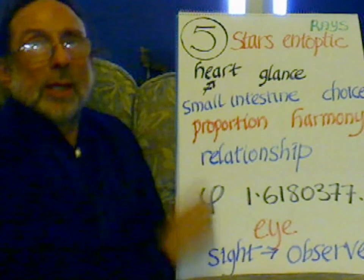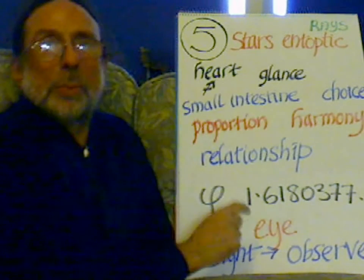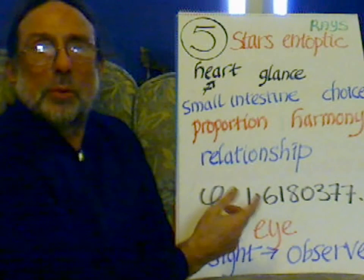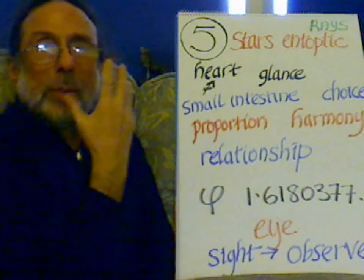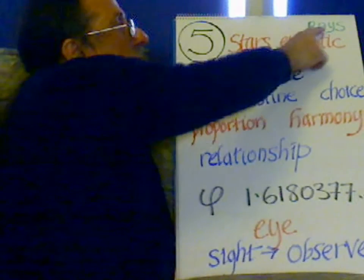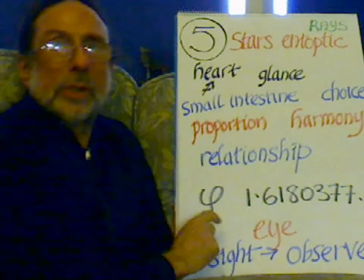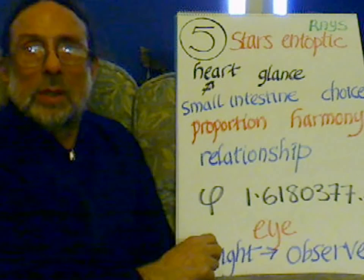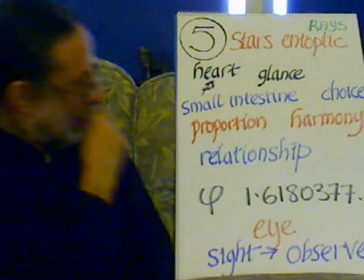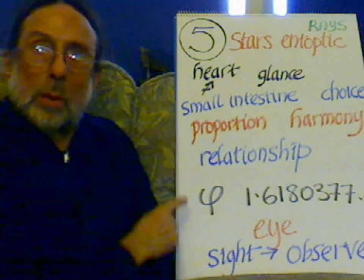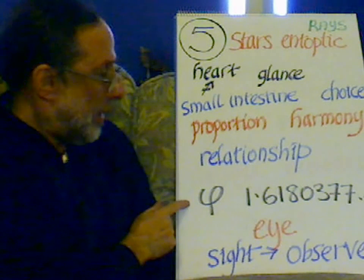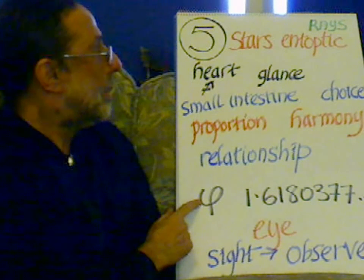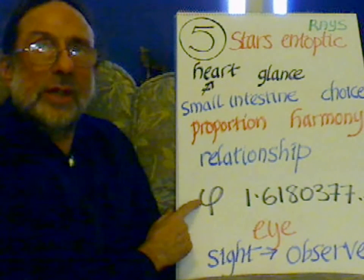Now correctly, this is the star's end optic. I always think of it as the ray's end optic, like the rays coming out of a light into your eye. The ray's end optic or the star's end optic — seeing stars. The five, the five-pointed star, which is phi, the golden mean. So it's seeing harmony — it's the eye seeing harmony.